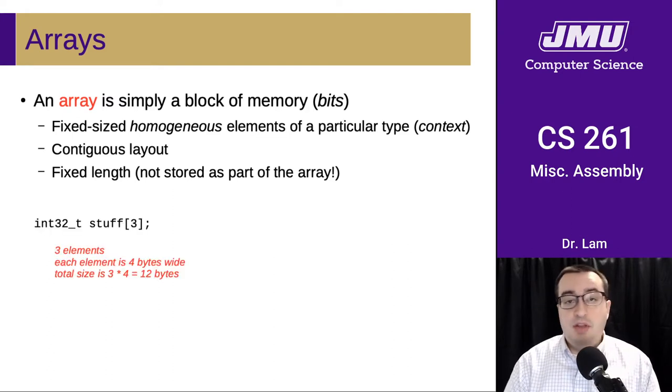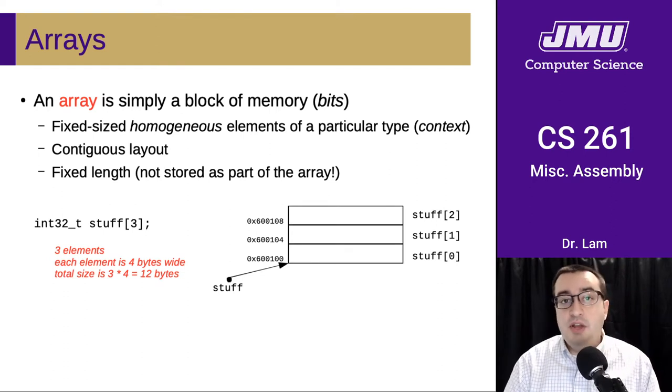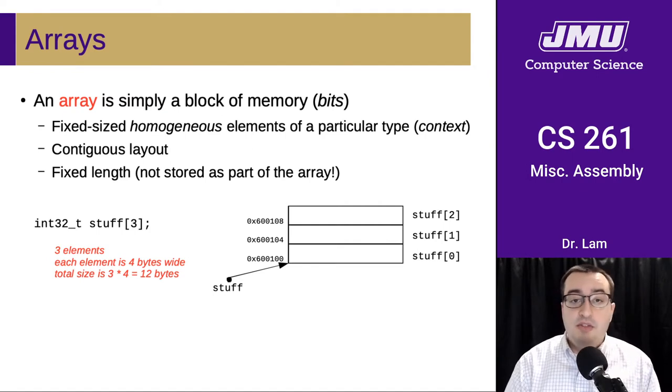Here is an example from C. We declare an array of three elements, and each element is going to be four bytes wide. We know that because of the type, so the total size of this array is three times four or 12 bytes. Here's a picture of how it would be laid out in memory. The first element would be at the base address of the entire array, then we would add four to that address to get the address of the next element, and then we would add eight to get to the next element.